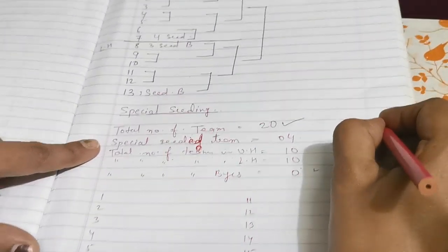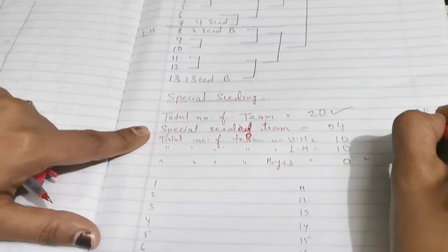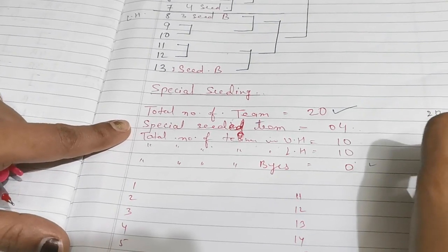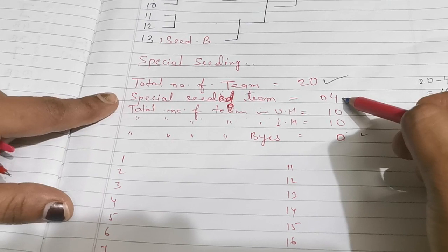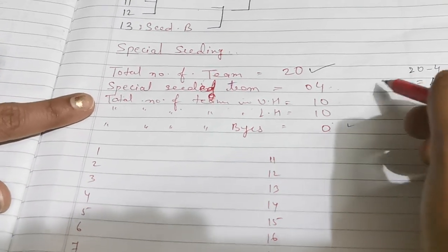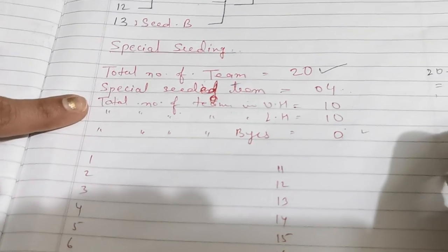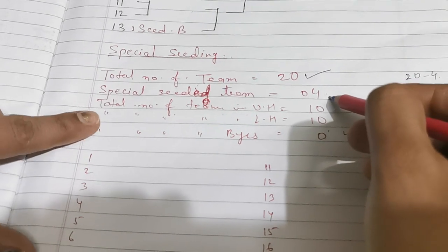16 teams come because these four will never get the bye in the first round, they will not be added. So we will minus the total number of seeded teams.